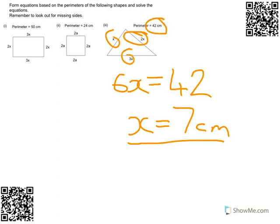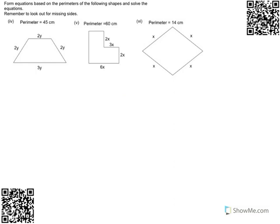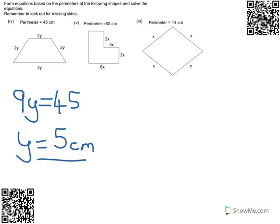Let's try some different ones. Have a go at the first question on this slide and I'll give you the answer in just a second. So press pause. For this one you should have got a total of 9y on the perimeter and that equals 45. So y equals 5.